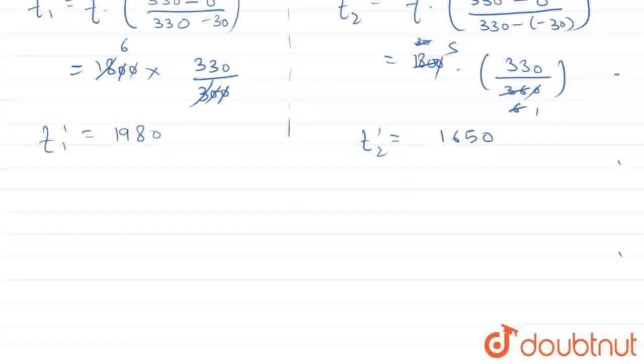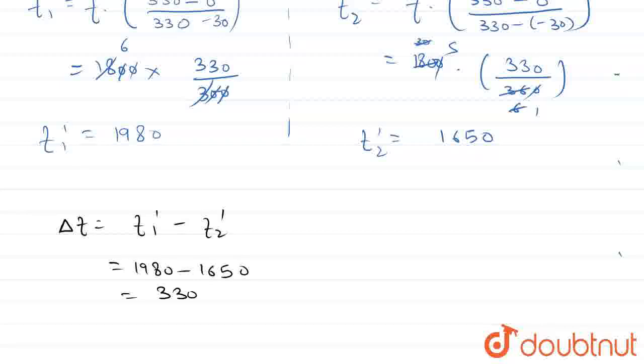Now we will find the beat. Delta f is equal to f1 dash minus f2 dash, is equal to 1980 minus 1650, is equal to 330 hertz. This is our delta f. Okay,